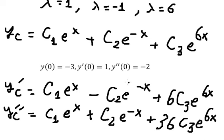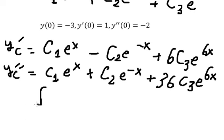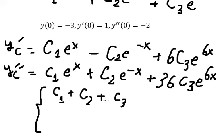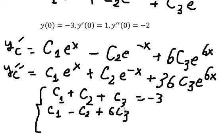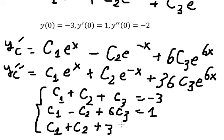Substituting x equals zero into yc and its derivatives gives us a system of equations. The first equation has c₁ plus c₂ plus c₃ equals negative three. The second equation is c₁ minus c₂ plus 6c₃ equals one. The third equation is c₁ plus c₂ plus 36c₃ equals negative two.